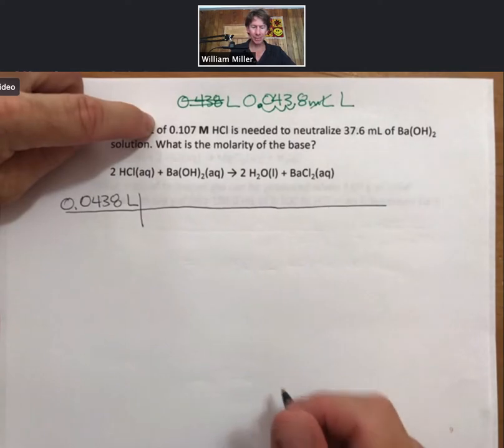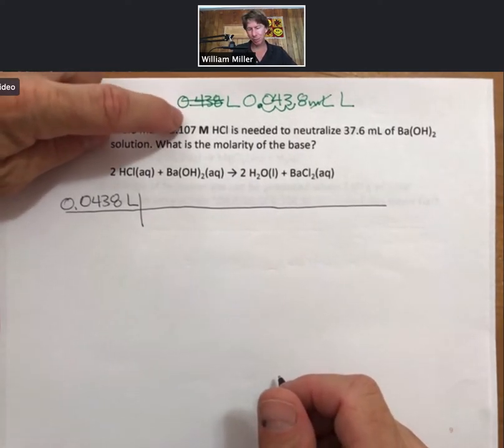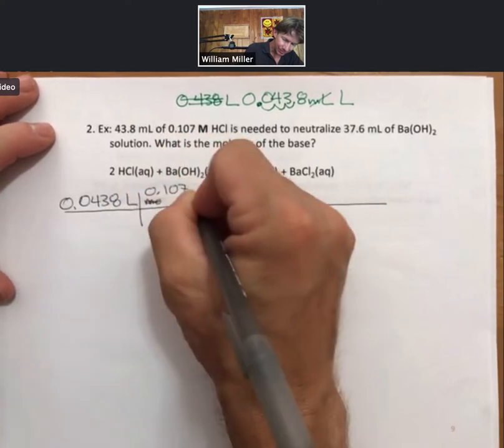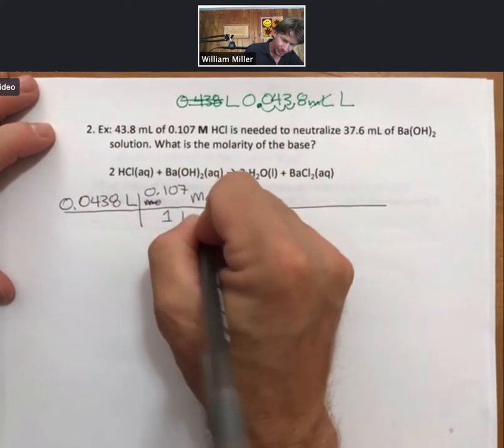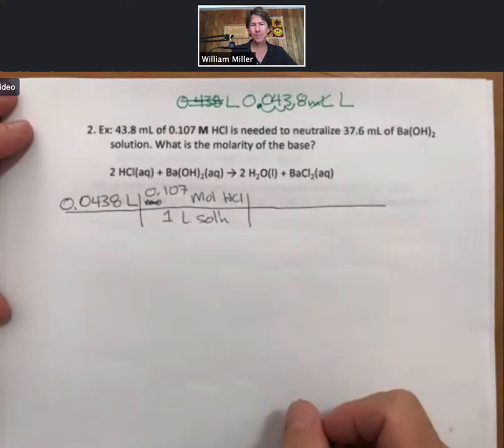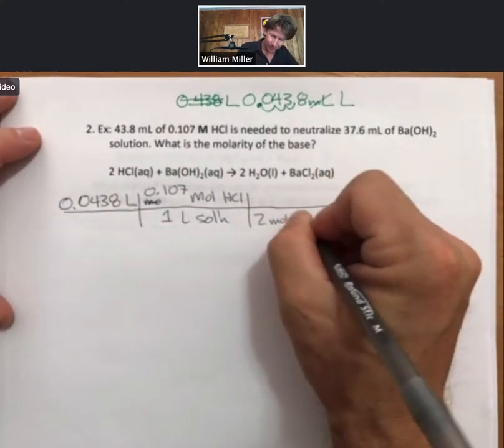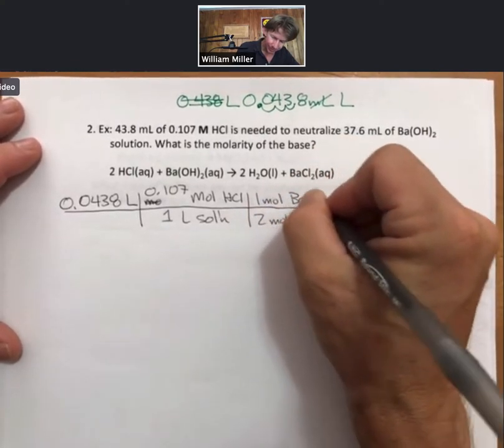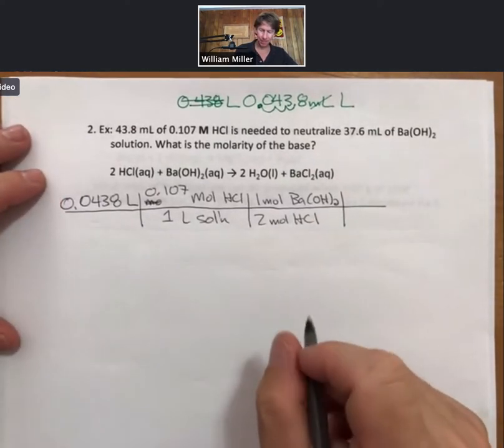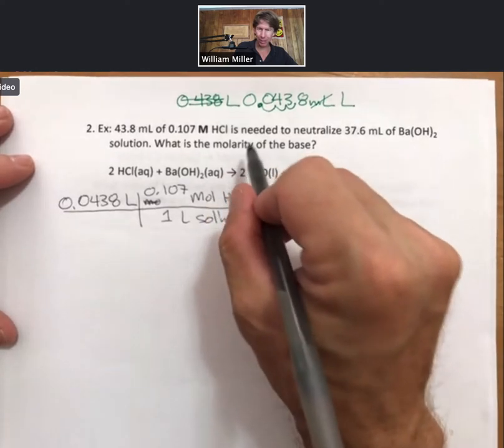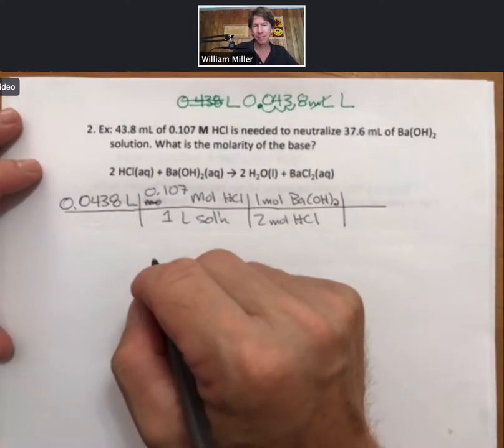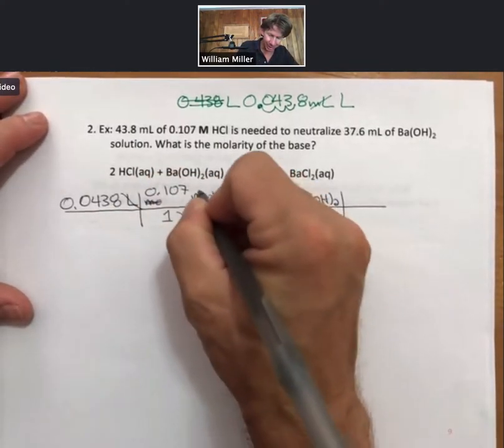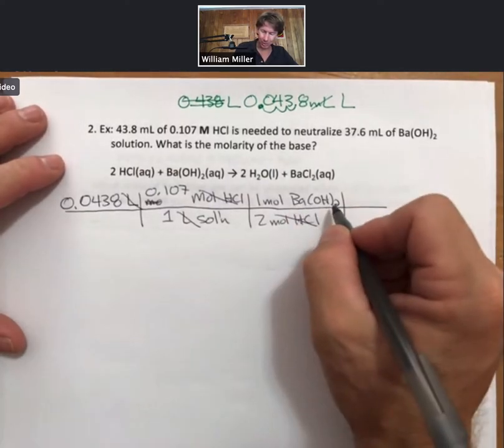Of means multiply. My molarity for HCl is 0.107 moles of HCl for 1 liter of solution. Then for every 2 moles of HCl has to go on the bottom to get my moles of HCl to cancel out. I need one mole of barium hydroxide and I don't have another molarity, so I can't set this problem up just like I did the last problem. I'm just going to take a step back and solve it like it is. I have my liters canceling, my moles of HCl canceling, and I'm left with my moles of barium hydroxide.